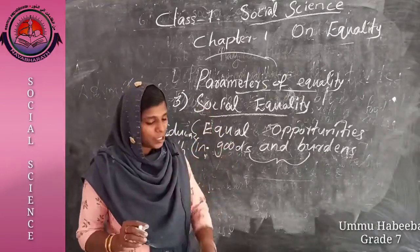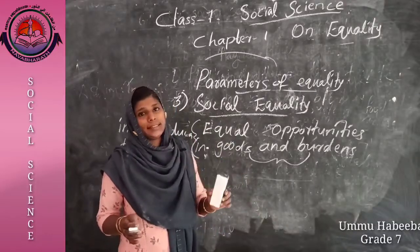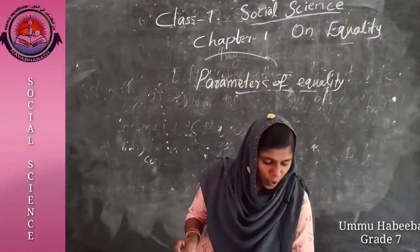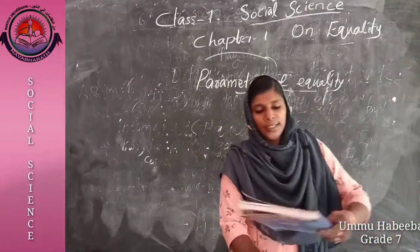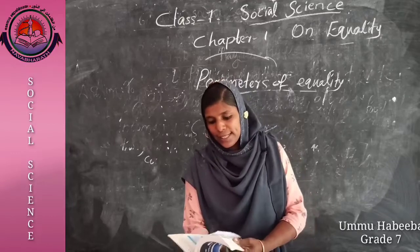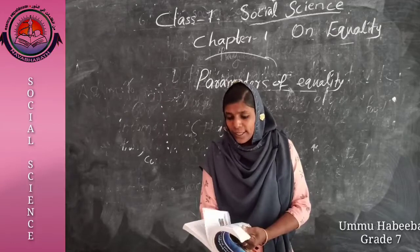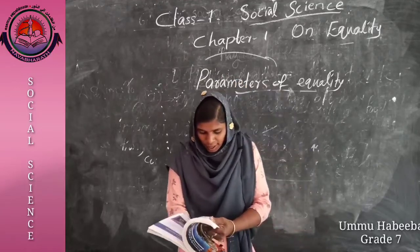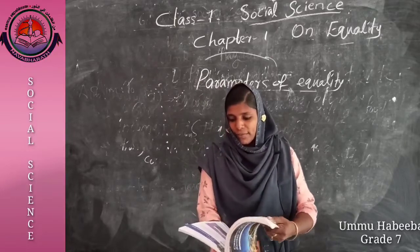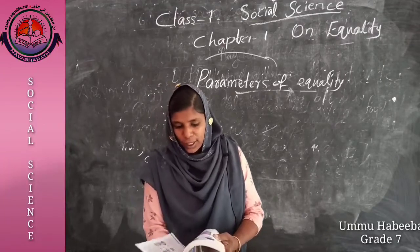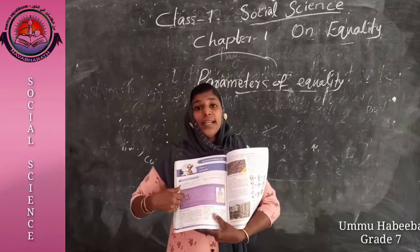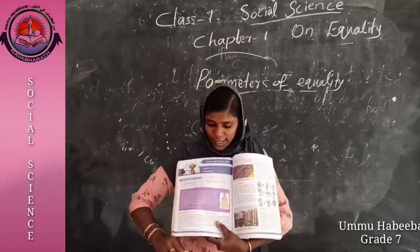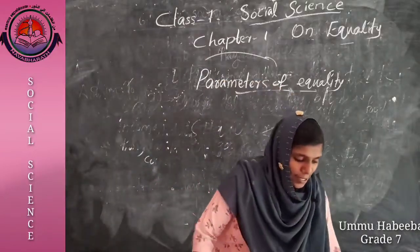Today we discussed the three parameters of equality and its definition. When we see our textbook in the chapter on equality, there is a girl named Mini and her brother, both waiting for their chances in a polling booth — not to cast their own votes but waiting for their parents. This is the context of the chapter on equality.